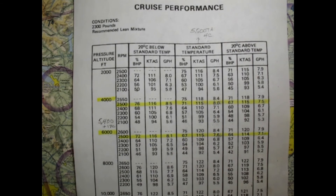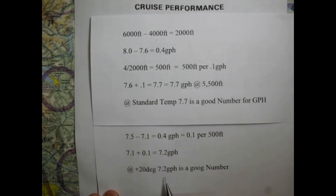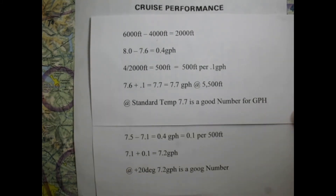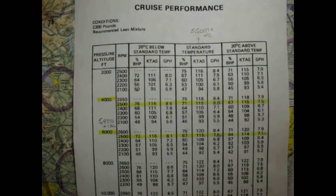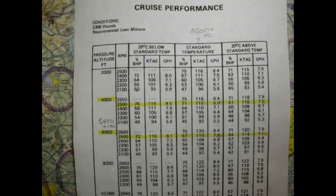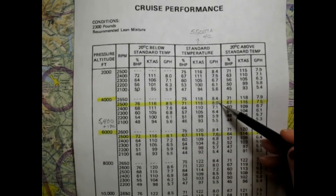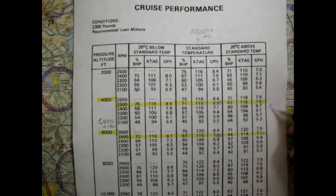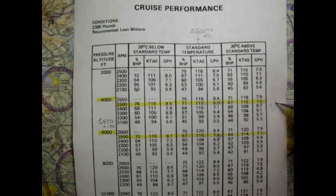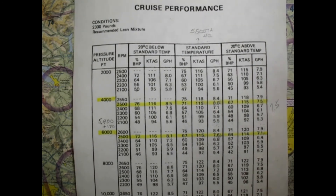So we need to decide: do we use 7.7 or 7.2 GPH? We want to err on the side of safety - we certainly don't want to run out of fuel. I'm a very cautious person and would personally go with 7.7 or even 8 GPH. But for the sake of this tutorial, I'm going to go with 7.5 GPH to make the math easier with the rest of the calculations.